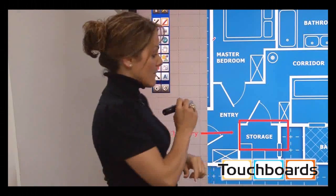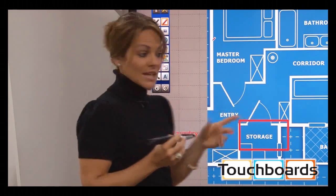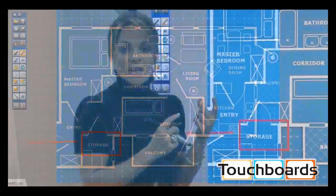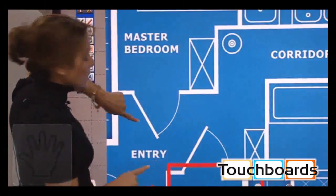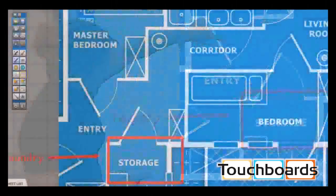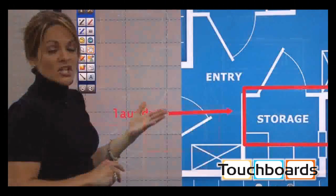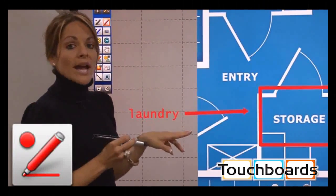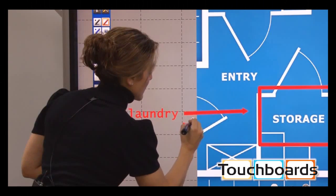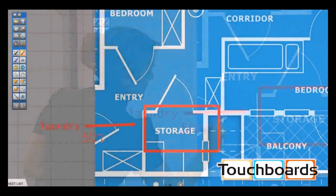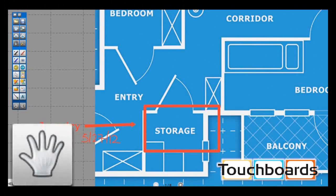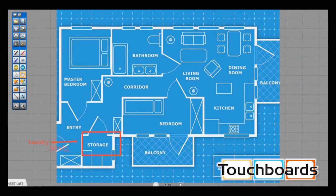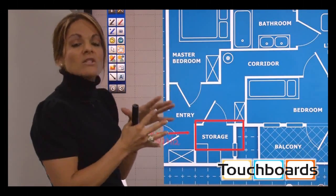Another great option for writing something freehand — like a date — is to first zoom in on an area with fine detail, scroll over to the portion of the document where you'd like to make an annotation, and then use the pen to write it in. Once I've written in the date and zoom back out, it will shrink the handwritten annotation so that it fits the original size of the document.